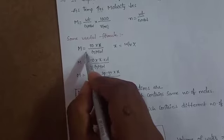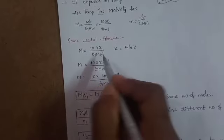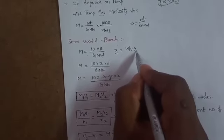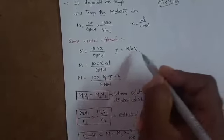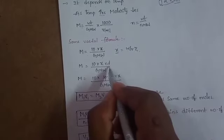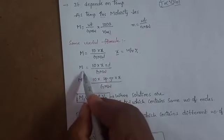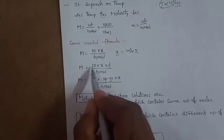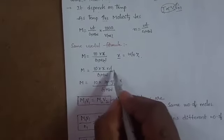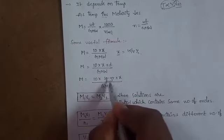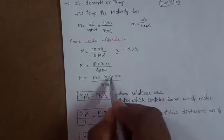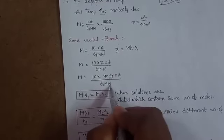For competitive exams: M = (10 × x) / gram molecular weight, where x is the weight-by-volume percentage. If the density of the solution is given, then M = (10 × x × d) / gram molecular weight. If specific gravity is mentioned instead of density, use M = (10 × specific gravity × x) / gram molecular weight.